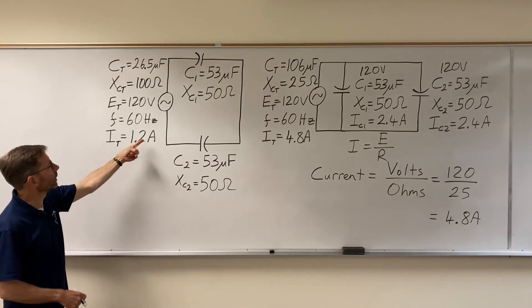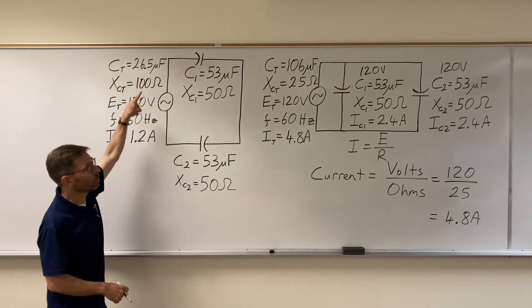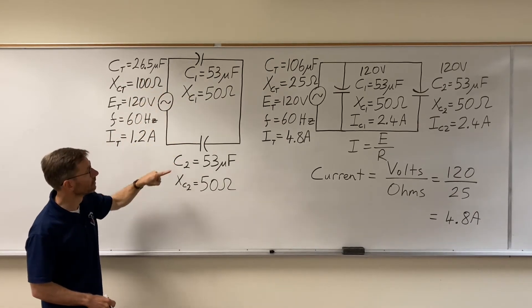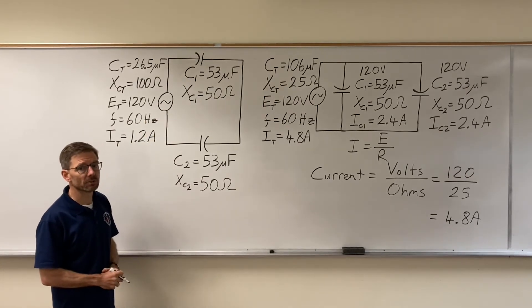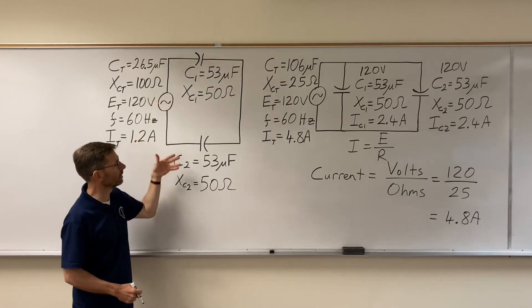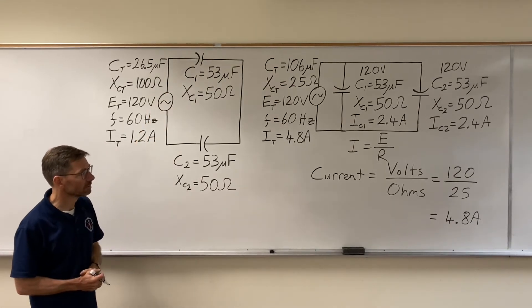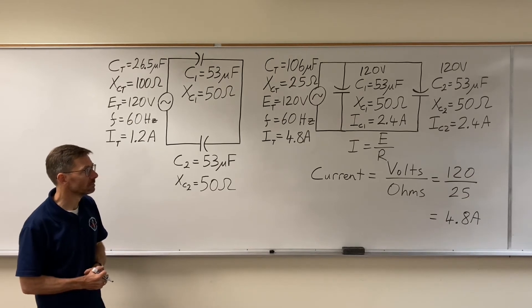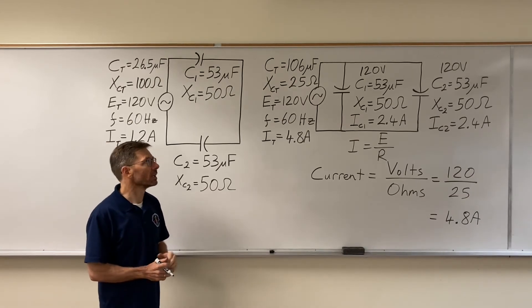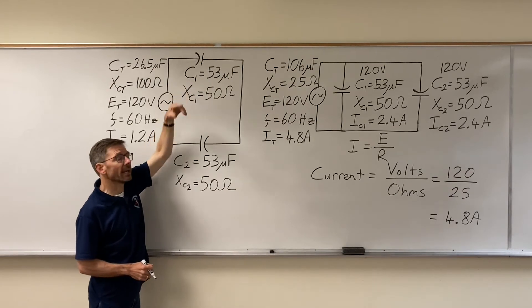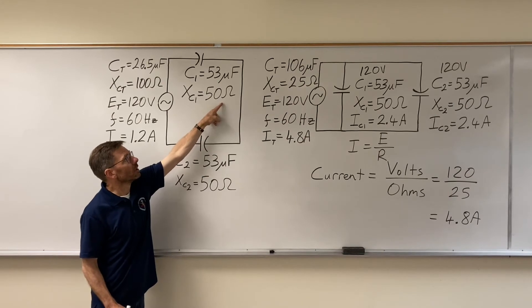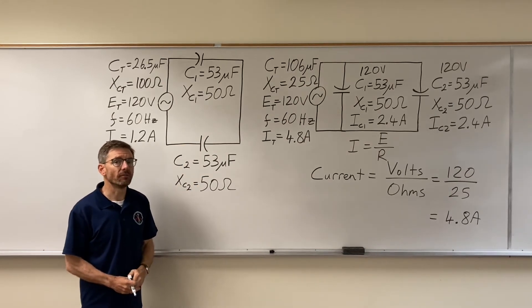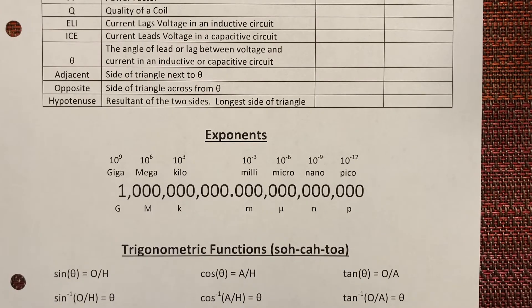And in a series circuit we would know that 1.2 amps is equal in all parts of the circuit, and therefore our voltage drops would be different. Half the voltage would drop here and half the voltage here. So that's how capacitors work. The capacitors themselves add up with the opposite rules, but when we get to ohms, ohms add up as ohms have always added up.